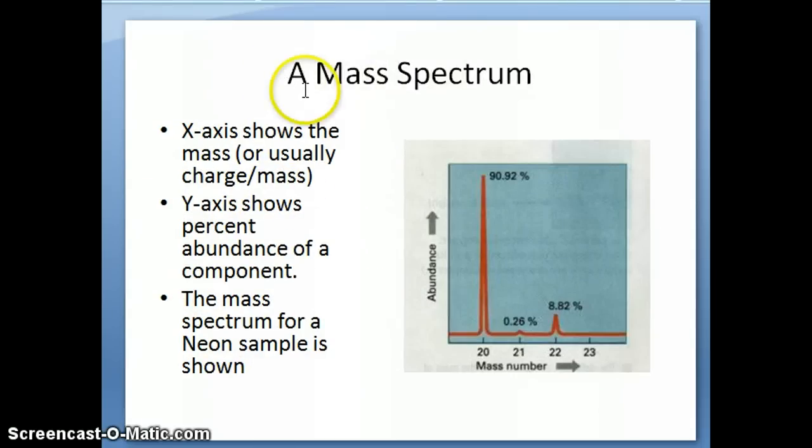So what do you get out of a mass spec? The result you get is called a mass spectrum, and it's shown on this slide. This is an example of the mass spectrum for neon, a sample of neon which we inject through the mass spec. It's showing basically three different things here.